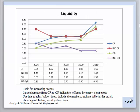Here's a picture of Coors' liquidity. We're looking for increasing trends. There should be a large decrease from current ratio to quick ratio, dependent on the amount of inventory in the company.